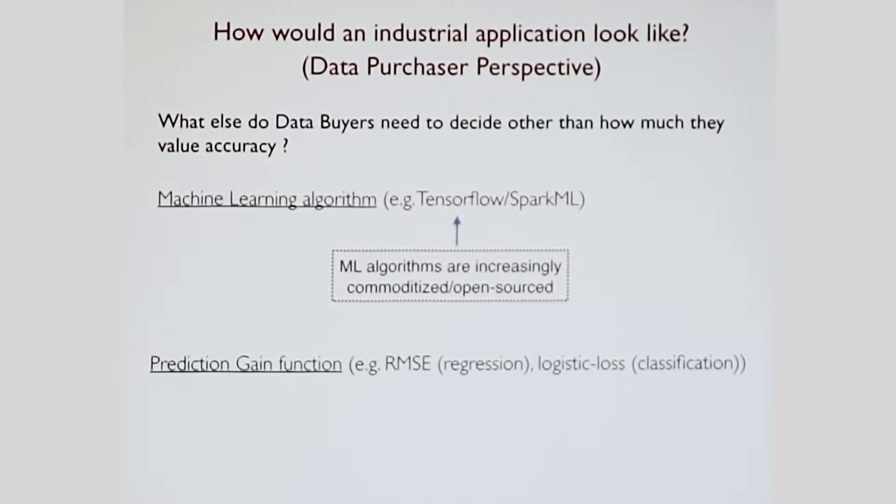The second thing you need to decide is the prediction gain function. What is your method for evaluating accuracy? If you're doing a regression task, it could be something like RMSE, or 1-RMSE, or if it's classification, it could be something like accuracy. So that's it. Once you have that, a buyer can start participating in the proposed market.